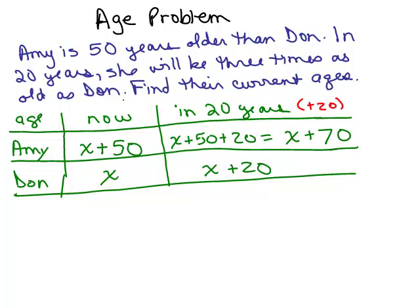Now we have to look at the rest of the clues from the problem. I think of this as a puzzle. In 20 years she will be three times as old as Don.